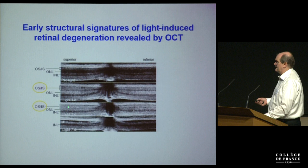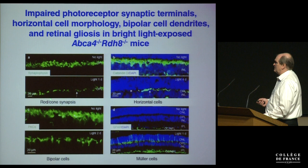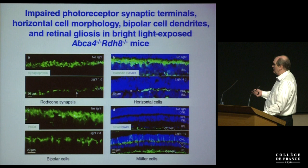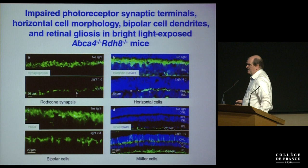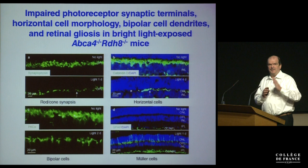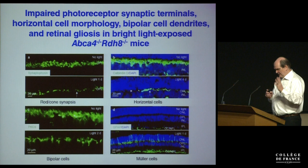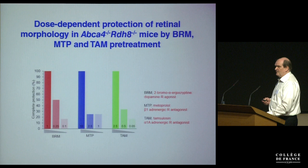Here just to show you OCT — the junction between inner and outer segment becomes very blurry quickly after light exposure. Throughout the degeneration you see changes across the entire retina: rod-cone synapses stained by synaptotagmin show dramatic changes, bipolar cells stained by PKC, horizontal cells by calbindin, and activation of Müller cells by GFAP expression. The entire retina is on fire. This is a binary system: the retina is either healthy or it dies, so we simply ask whether we can stabilize it under these very harsh conditions.